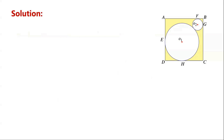How to find the area of the shaded region. Usually, the area of the shaded region in a figure is equal to the difference between the area of the entire figure and the area of the part that is not shaded. That is, for this problem, the area of the shaded region is equal to the difference between the area of the square and the area of the two circles.